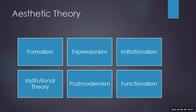Now let's look at different theories of art — philosophical frameworks that seek to understand the nature, purpose, and value of art. Formalism emphasizes the intrinsic qualities of artwork such as form, composition, color, line, and texture. According to formalist theory, the value and meaning of art are derived mainly from formal elements rather than external factors like historical context or the artist's intentions. Art should be appreciated for its aesthetic qualities and formal integrity, independent of subject matter or cultural significance.